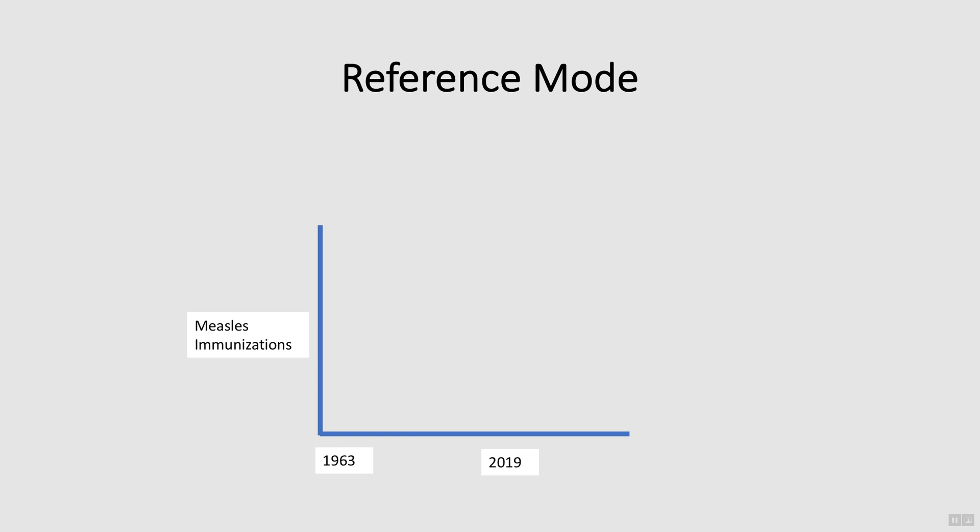When the vaccine was first introduced in 1963, it is likely that the immunisation rates were close to 100%. But over time, immunisation rates have begun to decrease and it is possible they may continue to decrease in future years. Thinking about the definition of a dynamic problem from the previous slide, it is one that involves altering a system's behaviour from one dynamic, the status quo or undesired pattern, to another dynamic. The current dynamic is an undesired pattern because it decreases over time. We want to change that dynamic to an increase. So this is a dynamic problem.